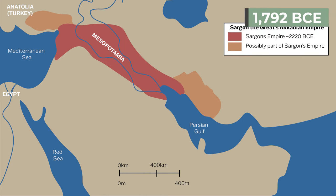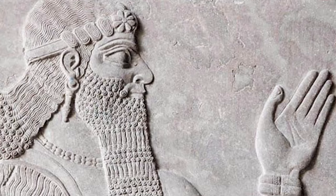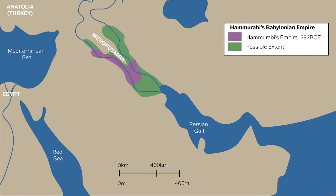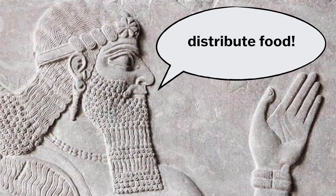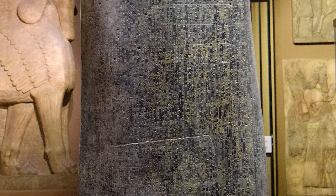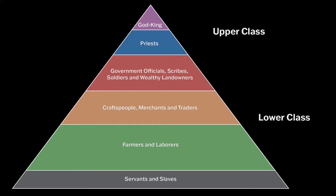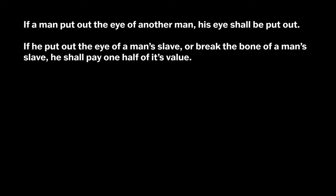It's 1,792 BCE and the Akkadian Empire has fallen. Mesopotamia moved back into a series of smaller empires and city-states until Hammurabi arrived and conquered Mesopotamia, adding it to the Babylonian Empire. While he did some other important things like erecting monuments, organizing food distribution, and building canals, his biggest accomplishment was the creation of one of the first codes of law. Hammurabi's code states the crime and a punishment that fit it. For example, one law says: if a builder builds a house for someone and does not construct it properly, and the house falls in and kills its owner, then that builder shall be put to death. If it kills the son of the owner of the house, the son of that builder shall be put to death. Laws were also dependent on the social status of the person — one law says if a man put out the eye of another man, his eye shall be put out, but another says if he put out the eye of a man's slave or breaks the bone of a man's slave, he shall pay one half its value.